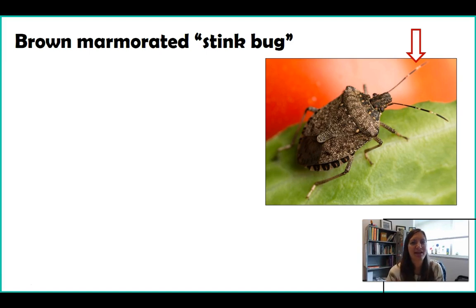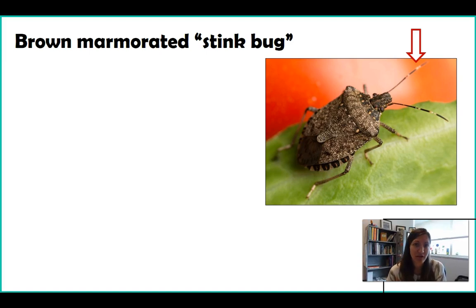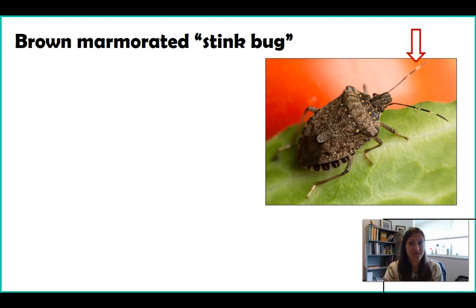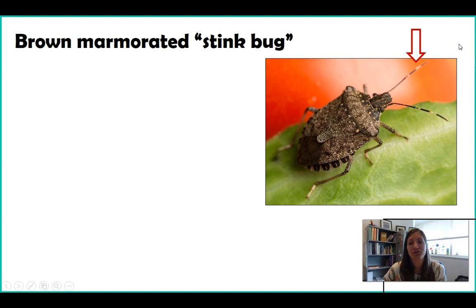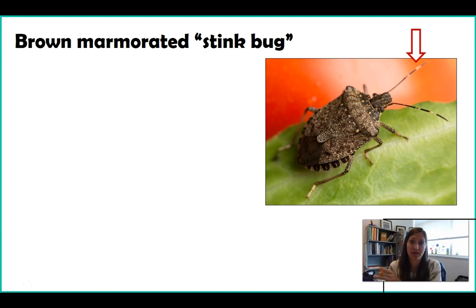Let's talk about some examples found locally here in Maryland. One is the brown marmorated stink bug — on tests you'll just see 'stink bug,' but Maryland actually has quite a few different stink bug species. The way you know it's the invasive one is by looking at the antennae: you can see white bands in the picture. That is the invasive stink bug. If you see them, you should kill them — but kill them in an open area, because when you kill them they release a chemical that stinks, hence the name stink bug.